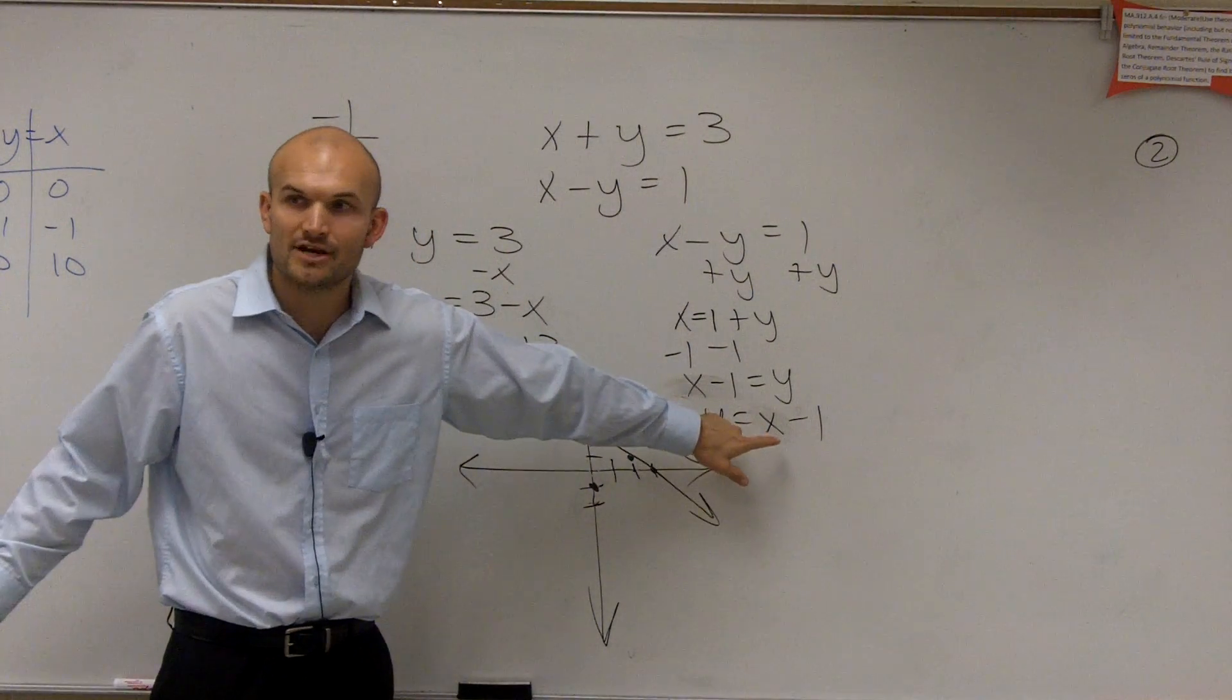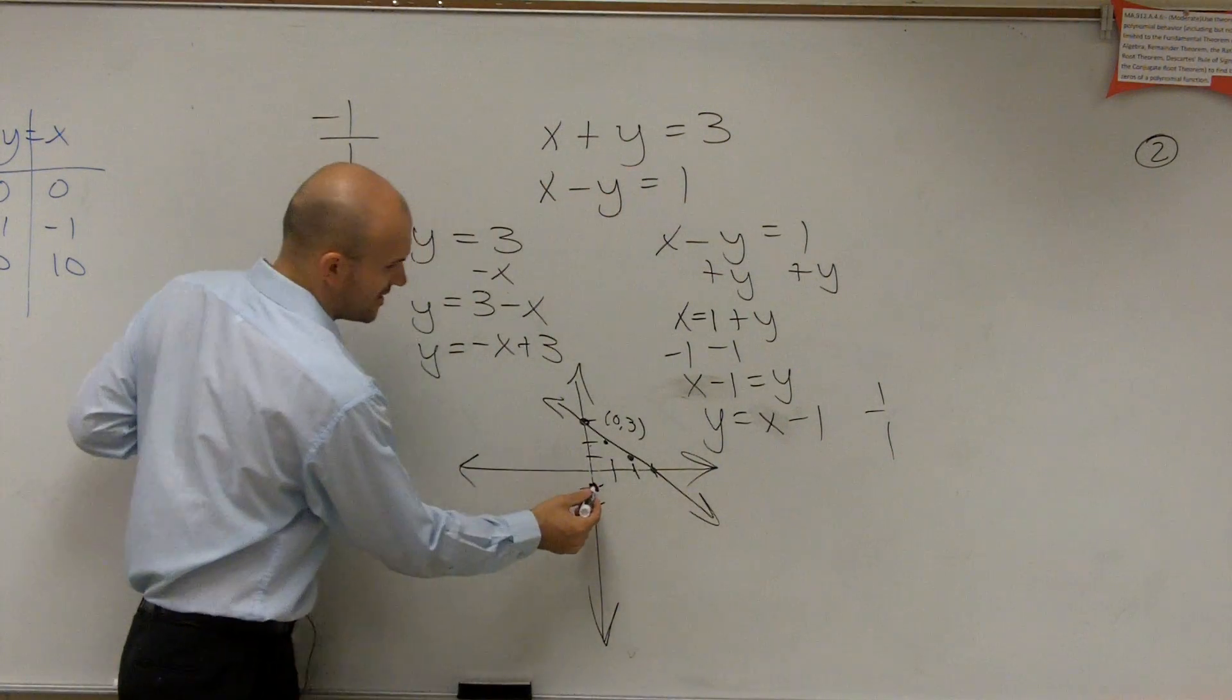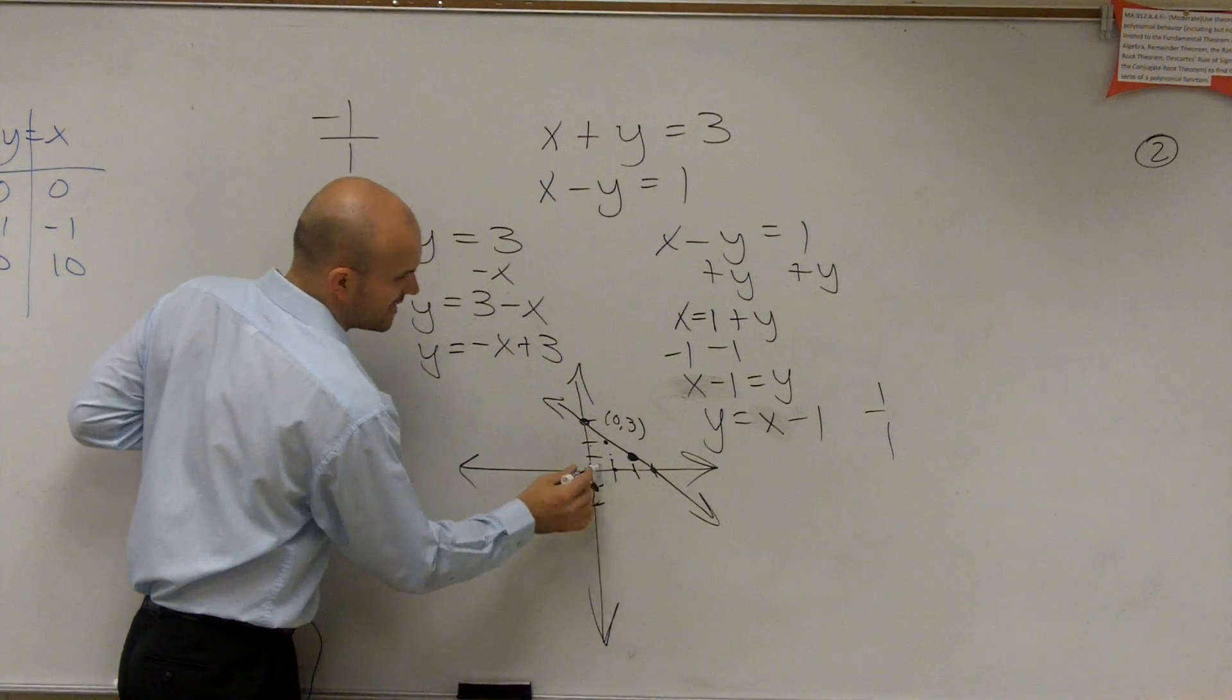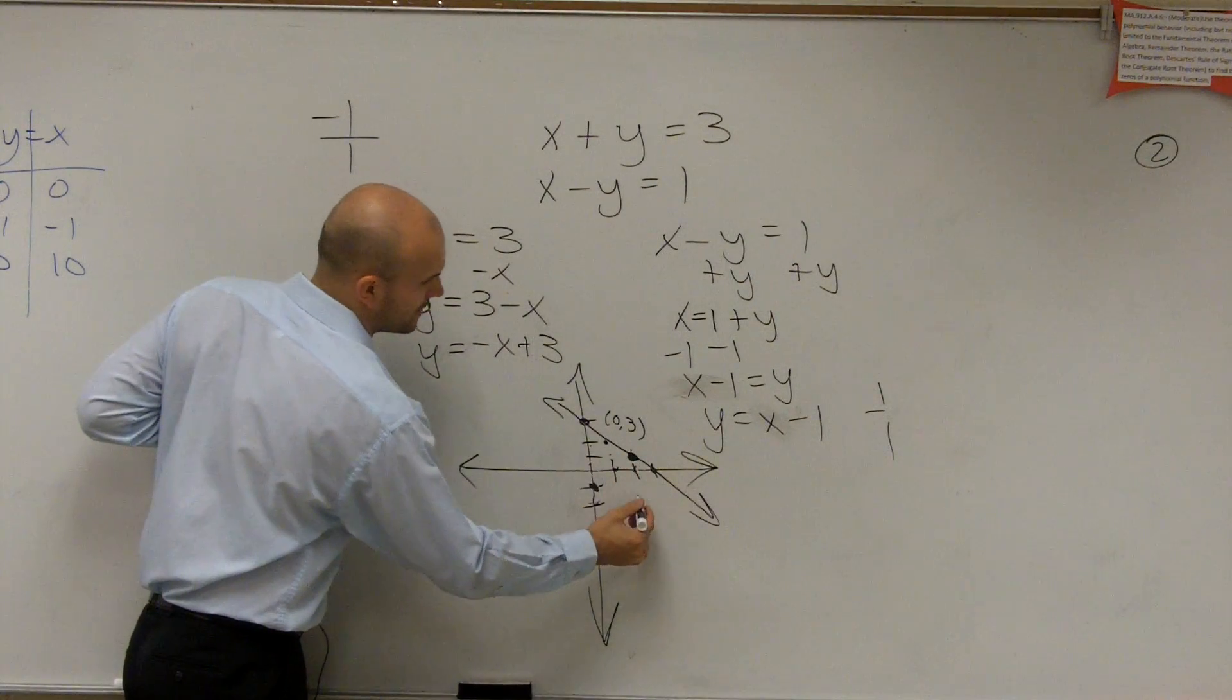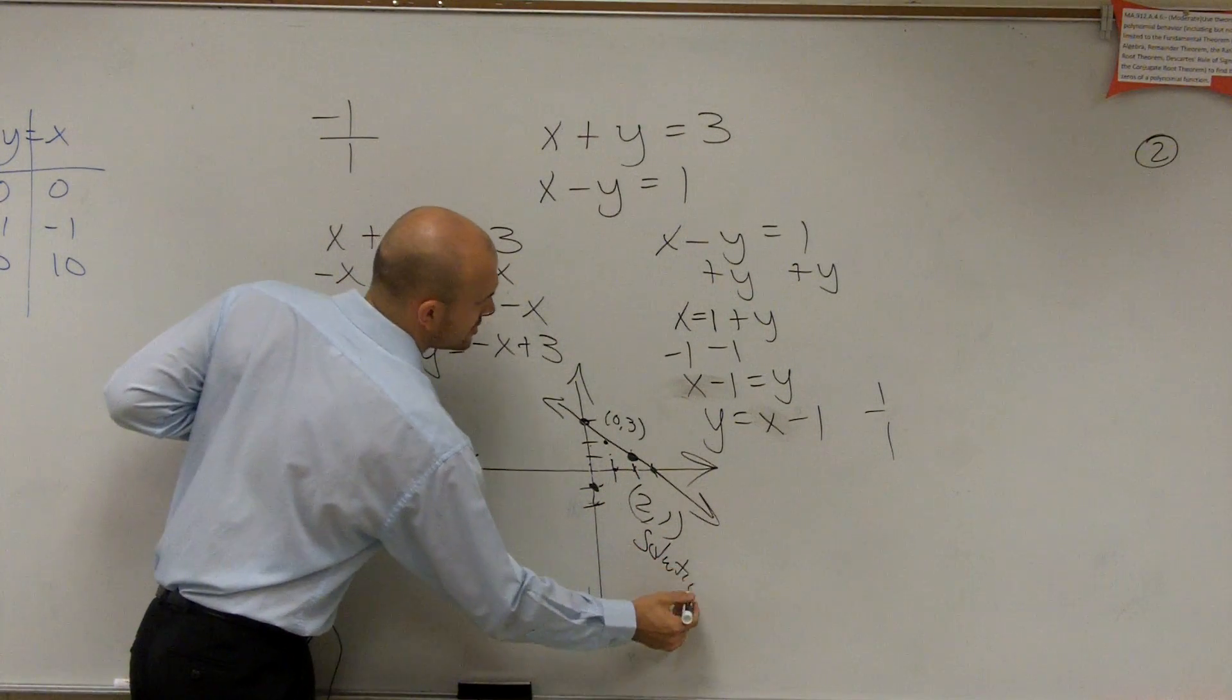Here, I don't have a number in front, right? So this slope is going to be 1 over 1. So I start at negative 1. I go up 1 over 1. Up 1 over 1. You can see they cross at 1, 2, up 1. So they cross at 2 comma 1 is your solution.